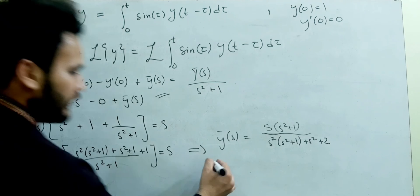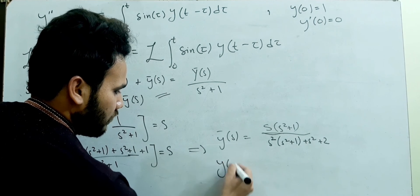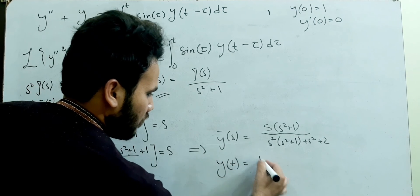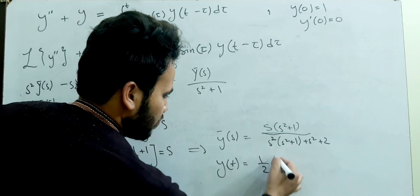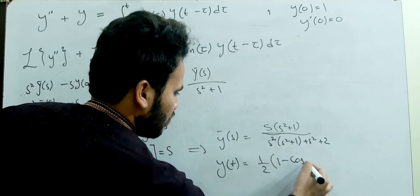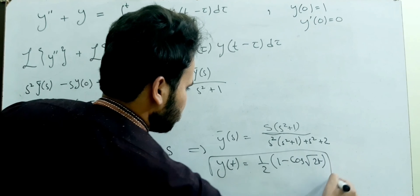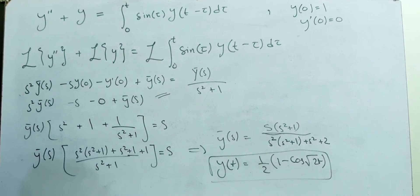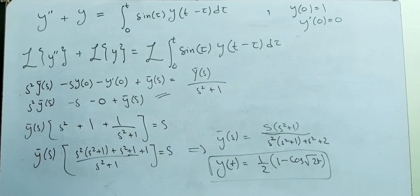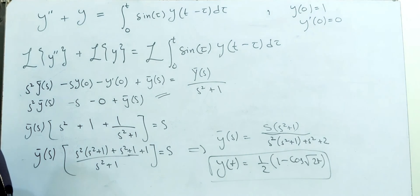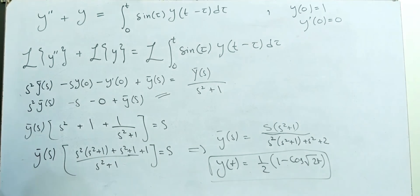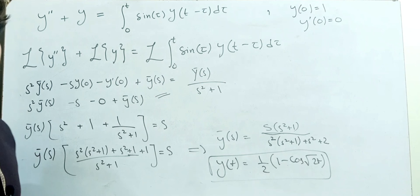Applying the inverse Laplace transformation, we have y(t) = cos(√2 · t). For help with the inverse Laplace step, please see my dedicated inverse Laplace video. Thank you, friends — if you like the content, kindly support me and subscribe my channel.